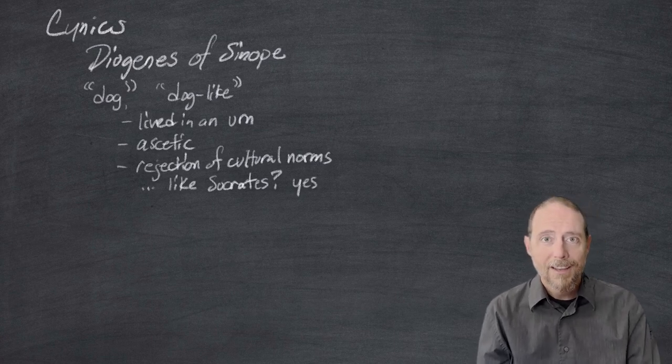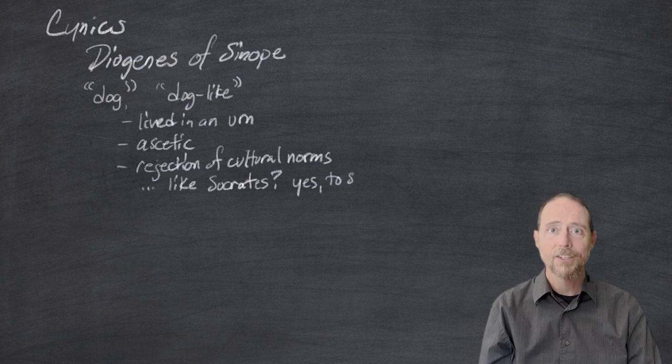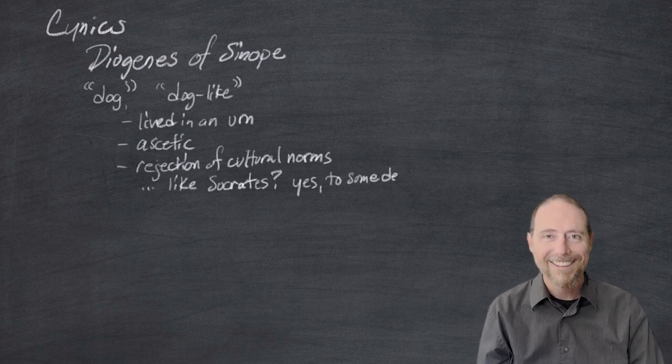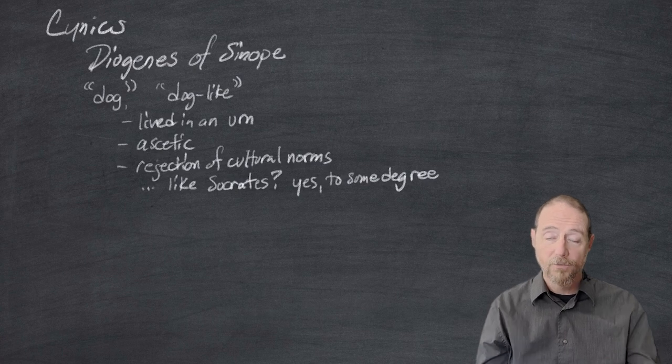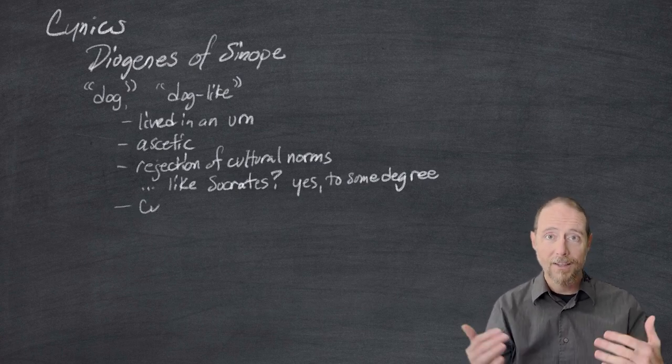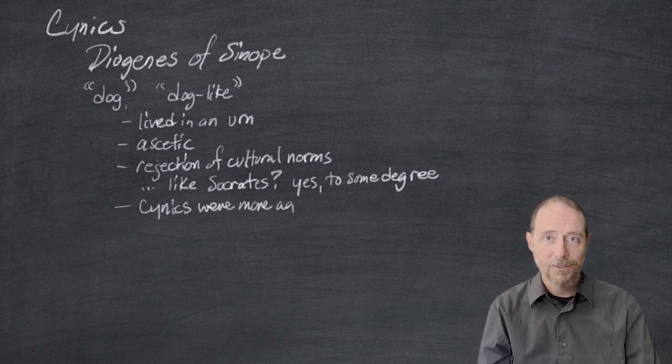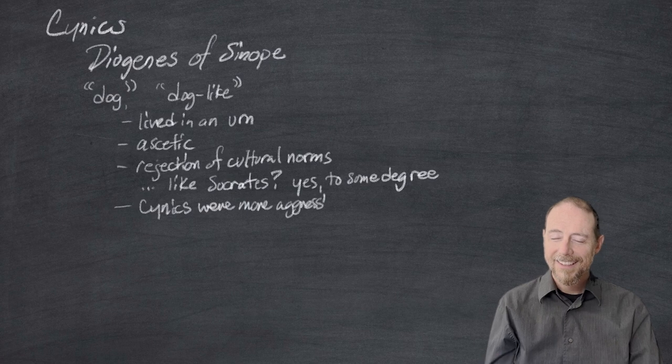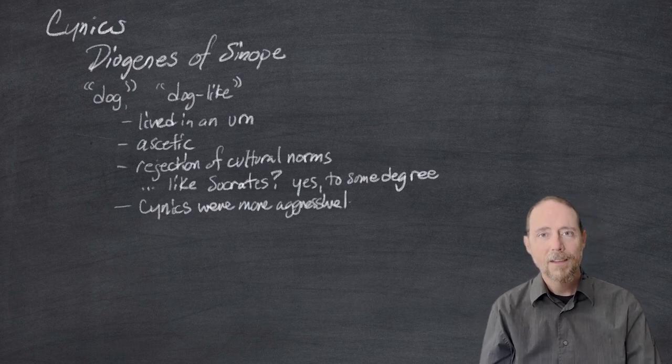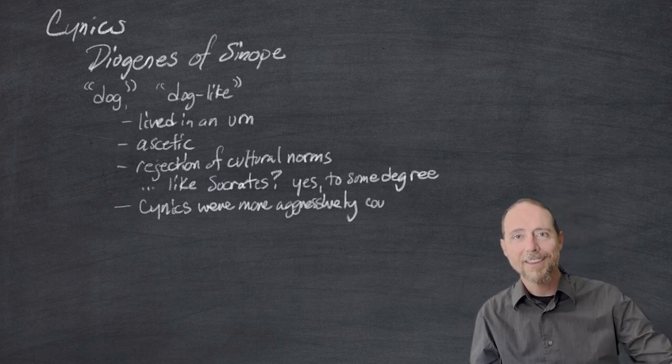One of the stories we get is that Alexander the Great came to visit Diogenes in his pot one day on the streets of Athens and said, I very much respect you, I hold you in high esteem. Is there anything I can do for you as the emperor? And Diogenes responded, you can stand out of my sunlight.